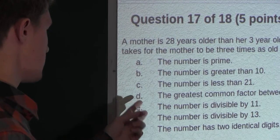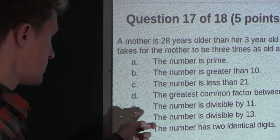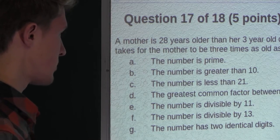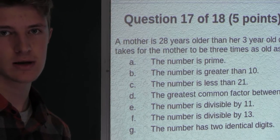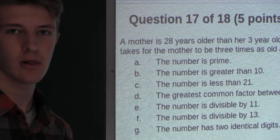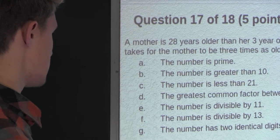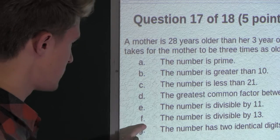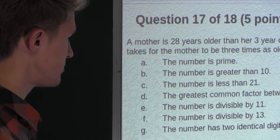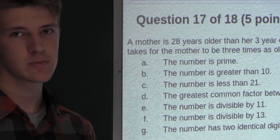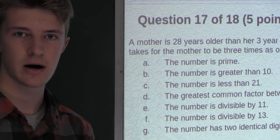So that means it can't be that option. So option E, the number is divisible by 11. Well, that's also true, because 11 divided by 11 is 1. So it can't be that option either. Now, option F, the number is divisible by 13. Well, that's false, because 11 is not divisible by 13.